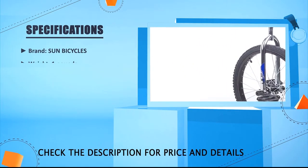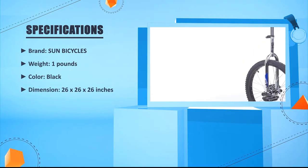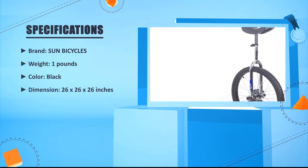Brand: Sun Bicycles. Weight: 1 pound. Color: black. Dimension: 26 x 26 x 26 inches.